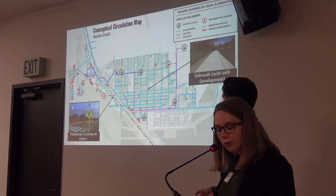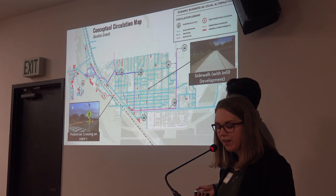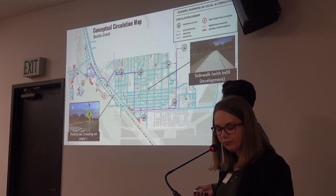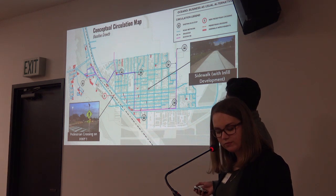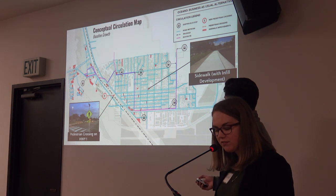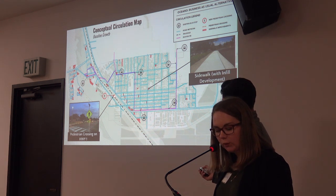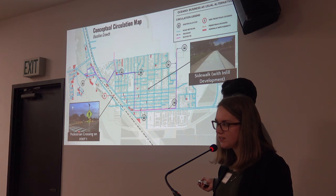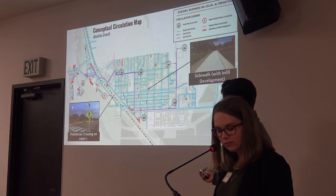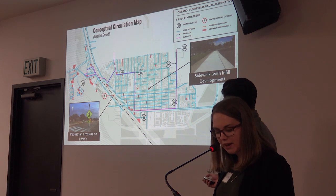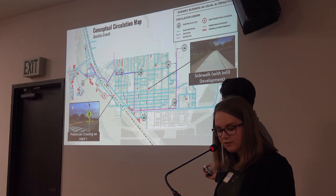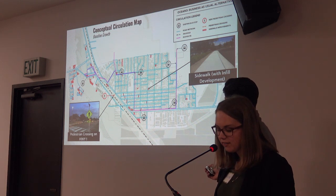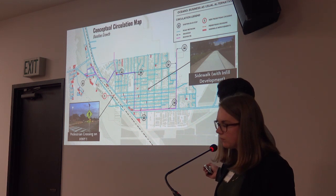The circulation network in Oceano is currently auto-oriented with a handful of bus stops in the community. This baseline scenario maintains this pattern but introduces two potential improvements. The first is a pedestrian safety crosswalk on Highway 1 with flashing beacons to create safer pedestrian access to the beach. The second improvement is the expansion of the sidewalk network as vacant land is developed. These areas of potential sidewalk improvement are indicated by the red parcels, which are currently vacant.